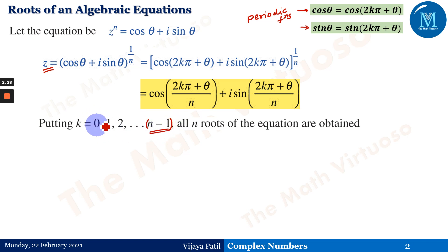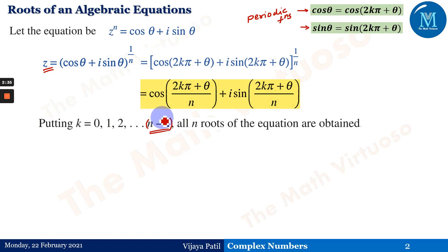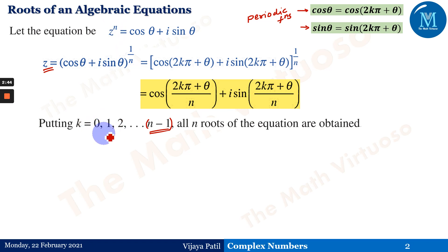If we put the values of k as 0, 1, 2, up to n−1 — we start from 0, so we go up to n−1 — we will obtain n number of roots. Because it is an nth root equation, the total number of roots equals n.